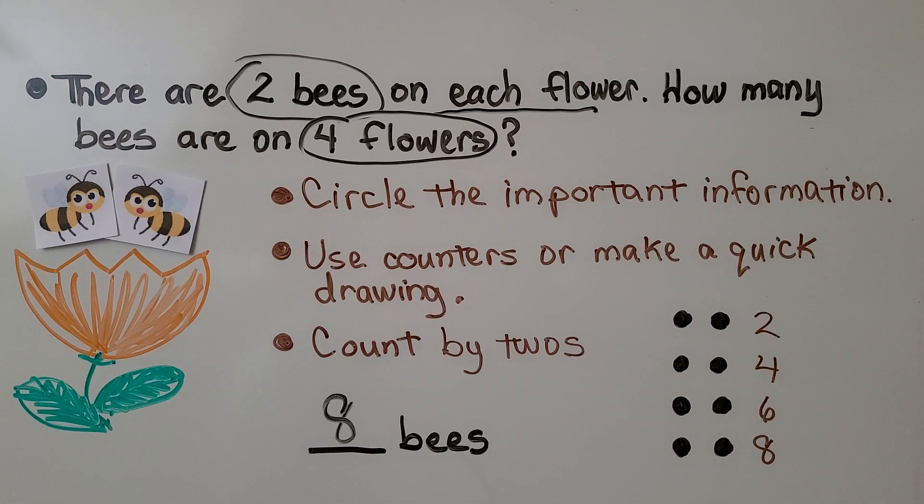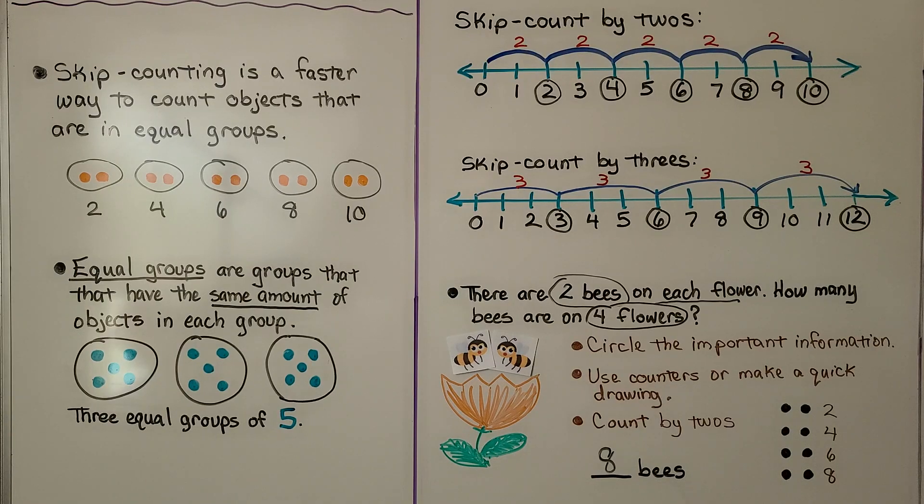And we can skip count by any number. We have to keep skipping the same number. We can skip count by fours, five, six, seven, eight, and more. We'll learn a lot more about equal groups and skip counting when we get into third grade.